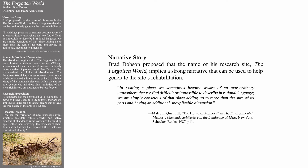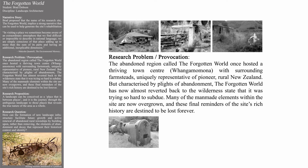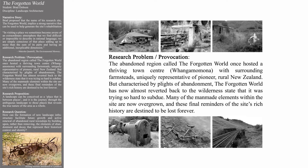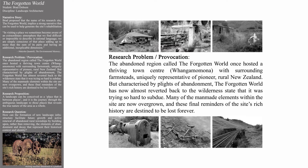Landscape architecture student Brad Dobson proposed that the name of his research site, The Forgotten World, implies a strong narrative that can be used to help generate the site's rehabilitation. The abandoned region called The Forgotten World once hosted a thriving town center with surrounding farmsteads, uniquely representative of pioneer rural New Zealand. But characterized by plights of abandonment, The Forgotten World has now almost reverted back to the wilderness state that it was trying so hard to subdue. Many of the man-made elements within the site are now overgrown and these final reminders of the site's rich history are destined to be lost forever.